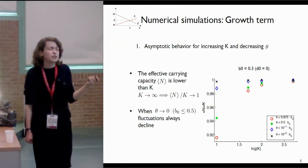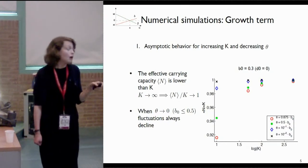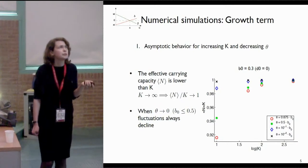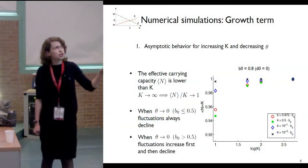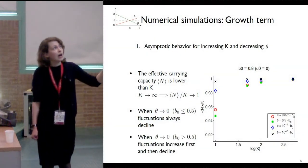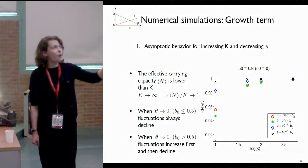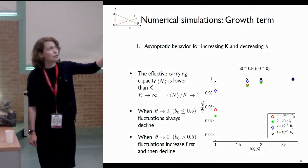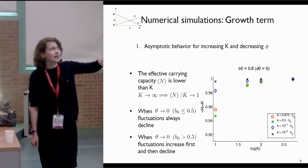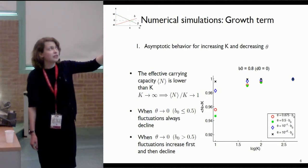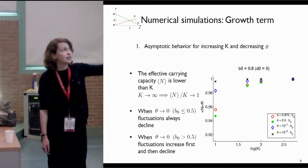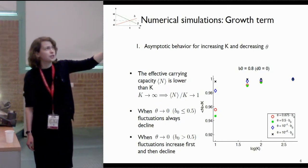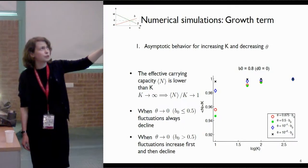This result is for b0 smaller than 0.5, and D0 for simplicity here and for following simulation is equal to zero. When we change b0 so that it is larger than 0.5, the situation changes. Again, red is the highest turnover rate, then we decrease it; however, the fluctuation increases, and then with further decrease of the turnover rate, fluctuation declines.